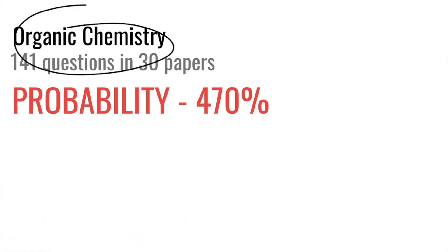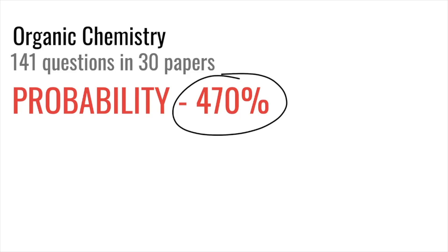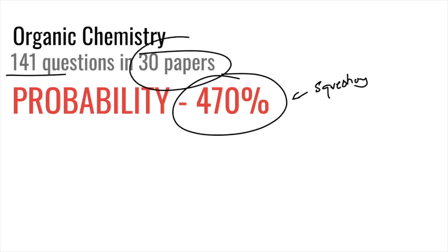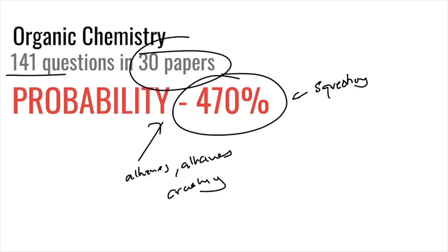Organic chemistry comes at the end of the paper with a 470% probability — about five questions per paper, based on 141 questions in 30 papers. This covers alkanes, alkenes, cracking, fermentation, carboxylic acids, and more. You need to know all the reactions, catalysts, and structures. They could give you a structure and ask you to name it.